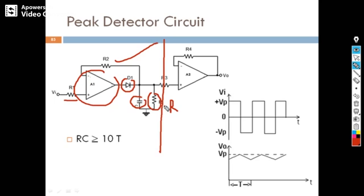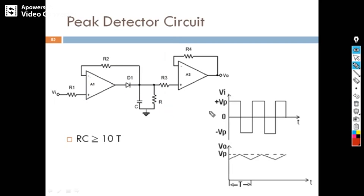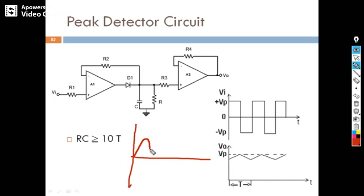R1 and R2 are very small, so the discharge will take a long time. Now let's see how this works. Let me draw the input — the input starts from zero, and this is the peak. My output should detect the peak of the signal.